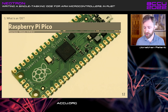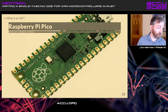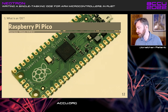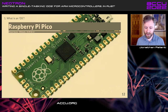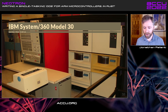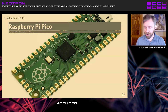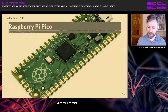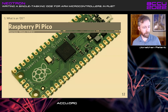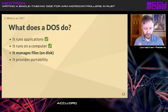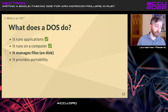That brings me to the question: if the RP2040 is a computer and the IBM PC is a computer, why can't I make the Pico a general-purpose computer? Why is it limited to being an embedded system? Why can I not walk up to it and run software of my choosing, exactly as I would with an IBM PC? That's what a DOS does - it runs applications on a computer, and we need to manage files on disk.